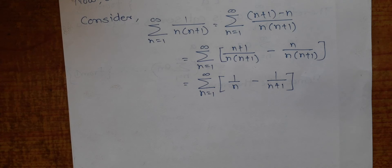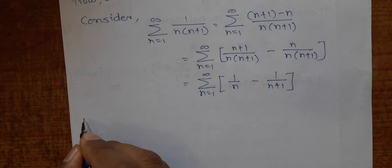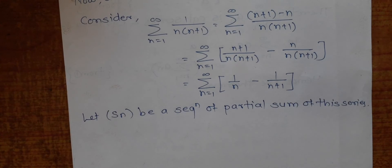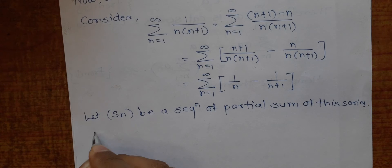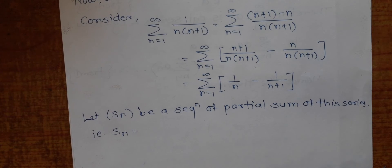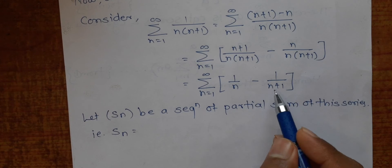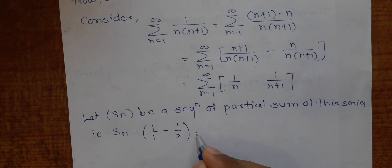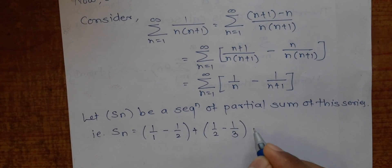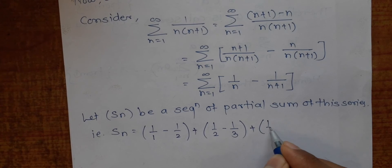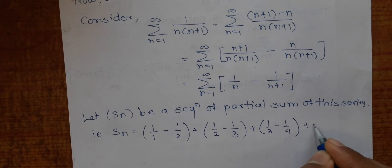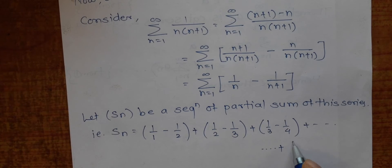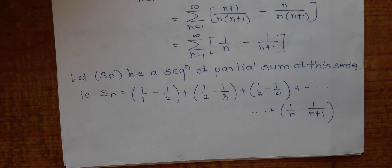We are going to consider the sequence of partial sums to prove that this series is convergent. Let Sₙ be the sequence of partial sums. Writing out the first n terms: n=1 gives (1/1 - 1/2), n=2 gives (1/2 - 1/3), n=3 gives (1/3 - 1/4), and so on, with the last term being (1/n - 1/(n+1)).